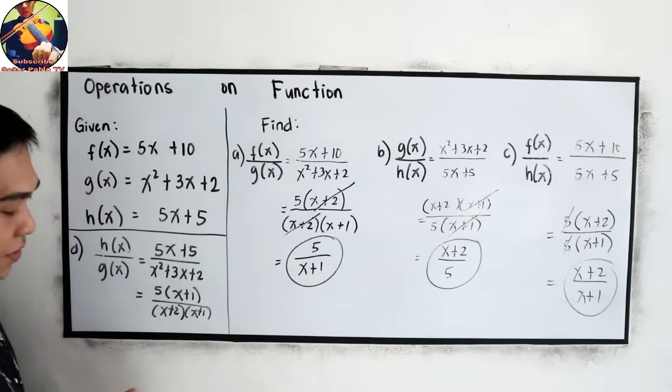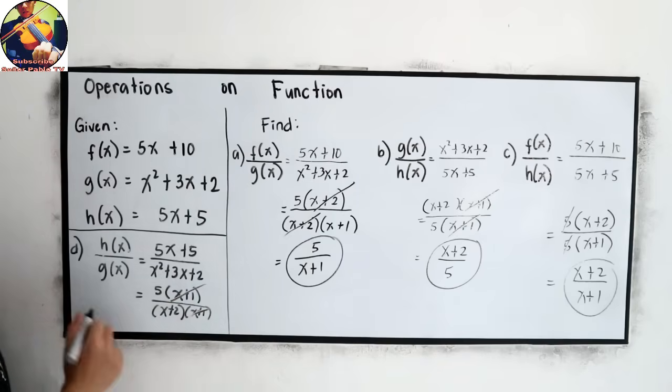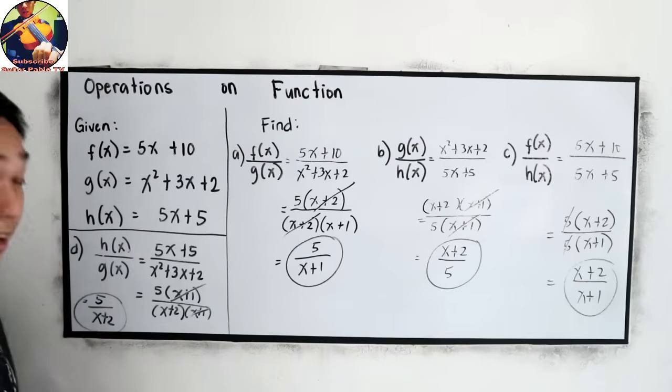Cancel similar terms in the numerator and denominator. So our final answer is 5 over x plus 2. h of x over g of x is 5 over x plus 2.